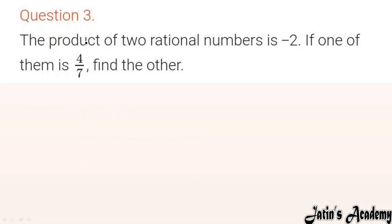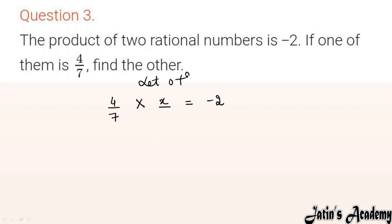Question 3: The product of two rational numbers is minus 2. One of them is 4/7 — find the other. Let the other number be x. Since 4/7 × x = minus 2, we move 4/7 to the other side by dividing. So x = minus 2 ÷ (4/7).